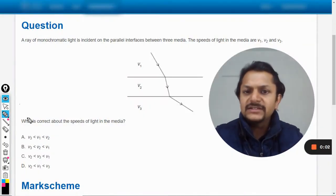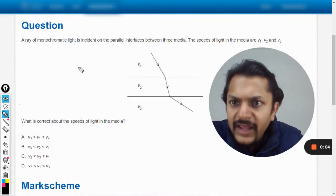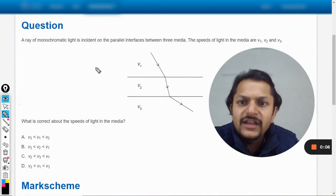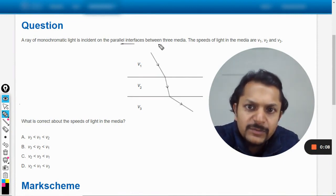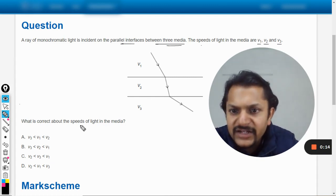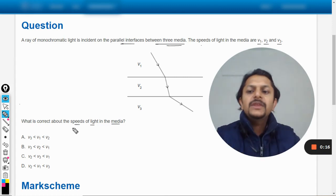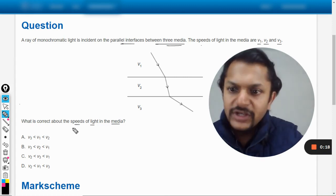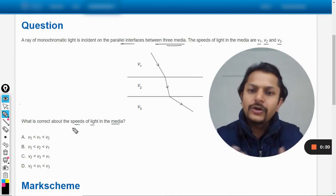Okay dear students, let us see what this question is about. A ray of monochromatic light is incident on parallel interfaces between three media. The speeds of the light are given as v1, v2, and v3. What is correct about the speeds of the light in the media? We have to determine the increasing or decreasing order of which velocity will be more and which will be lesser.